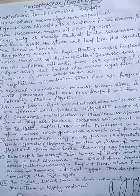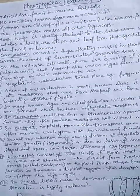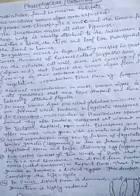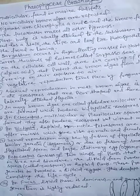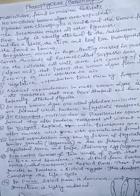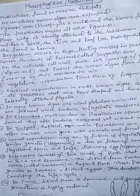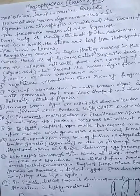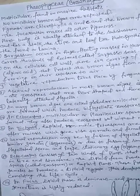The plant body of brown algae is usually attached to the substratum by a holdfast, a stalk-like structure called the stipe, and a leaf-like photosynthetic structure called the frond or lamina.